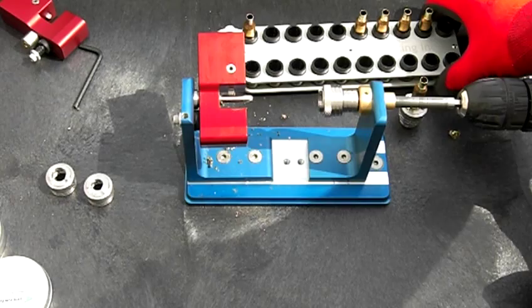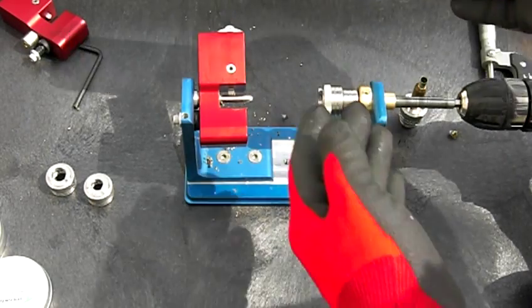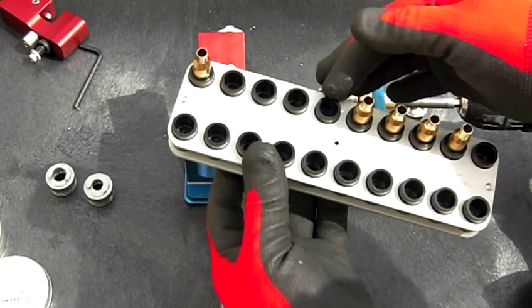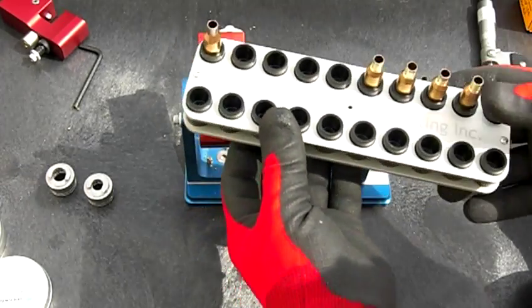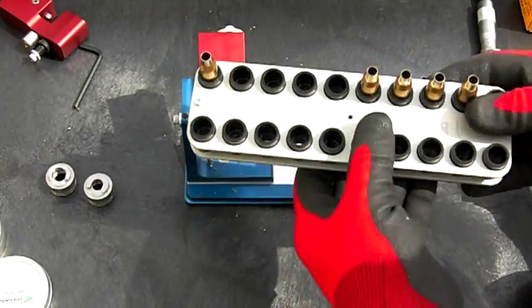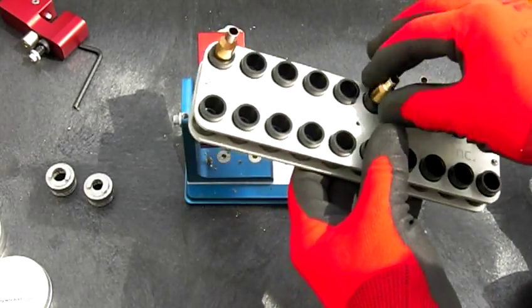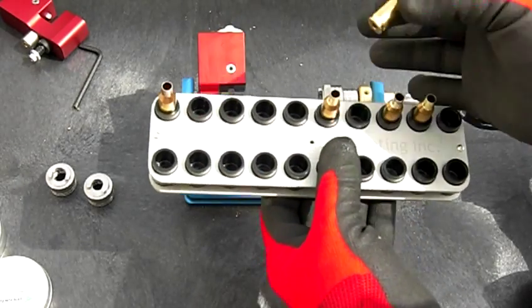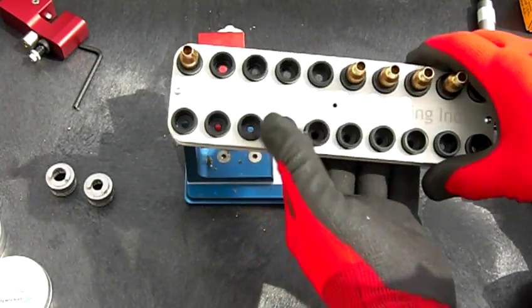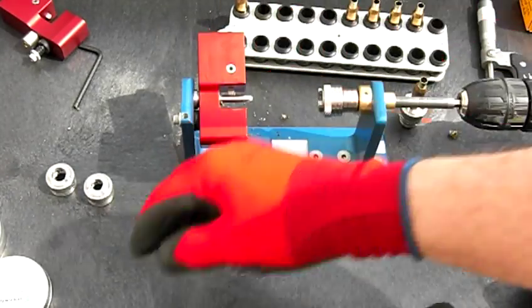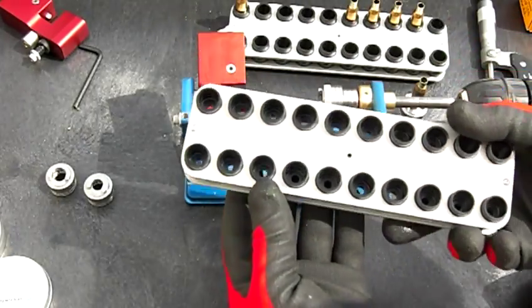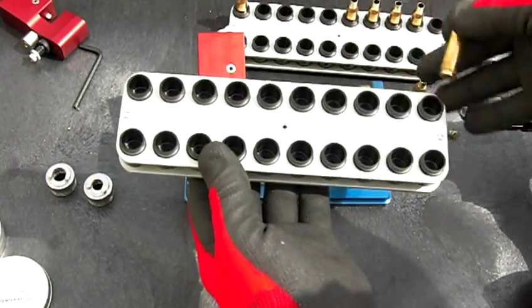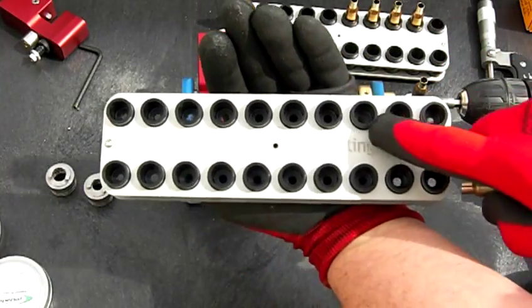Also, I want to show you our new 21st Century Shooting Loading Blocks. They're a modular design. Plastic that will not harm your case. Won't scratch them. And you pay a dollar, sometimes more than a dollar for a case. You don't want to get them scratched. And also, you flip them over and they'll hold different cases. Bigger. This one holds the 284. This side holds the BR.